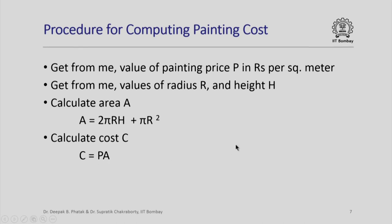Did you have any difficulty in understanding this? Observe that we have deviated slightly in the symbols used — we used small r for radius in the previous slide, here we are using capital R. But you understand it easily because for you it does not make a difference whether r is small or capital; it still means a radius to you. However, later on we will note that when we write computer programs we have to be very careful, because each name has to be unique and must be used exactly in the same way everywhere to mean the same thing. Consider the steps of this procedure — do you agree that this procedure will give you the final computed painting cost?